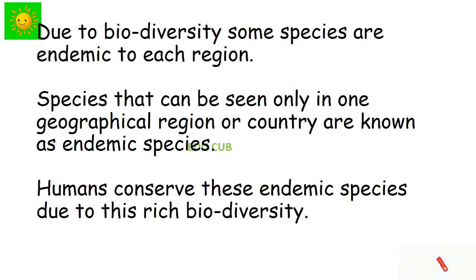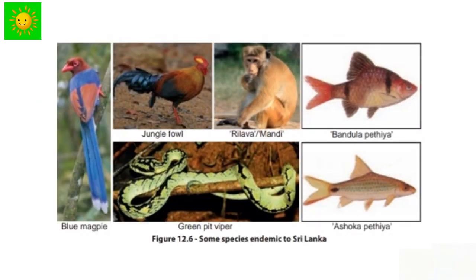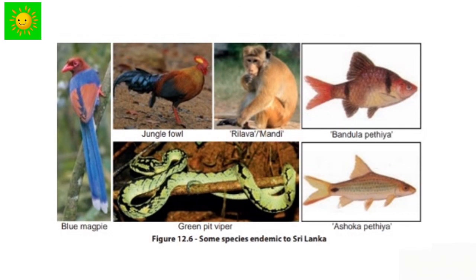Due to biodiversity, some species are endemic to each region. Species that can be seen only in one geographical region or country are known as endemic species. Humans conserve these endemic species due to this rich biodiversity. Now you can see some species endemic to Sri Lanka: Blue magpie, Jungle fowl, Trillava, Bandula petia, Green pit viper, and Ashoka petia.